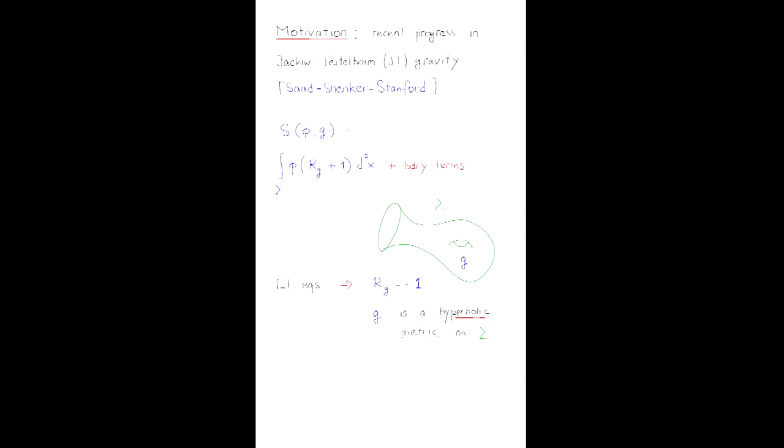Here is the action principle for this Jackiw-Teitelboim or JT gravity. It depends on two fields: a Riemannian metric on a two-dimensional surface and a scalar field. Up to boundary terms, which are very important, it's an integral of this scalar field times the curvature of the metric plus a constant. Here I chose this constant to be plus one. As you easily see, one of the Euler-Lagrange equations for this model is that the curvature is equal to minus one.